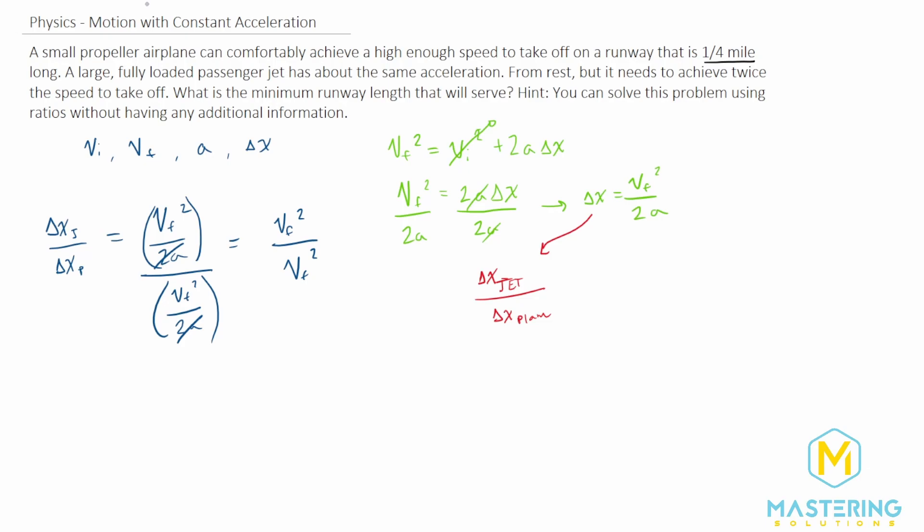In the question, though, they tell us that we need twice the final velocity for the jet than we do for the plane. So if we put that in, let's come down here, we have 2 times the final velocity squared divided by 1 times the final velocity squared. Obviously, we can ignore the 1. It's implied if we just have the variable.